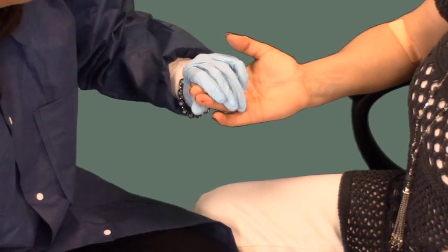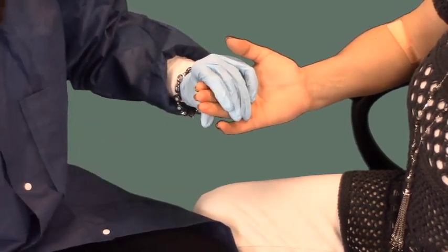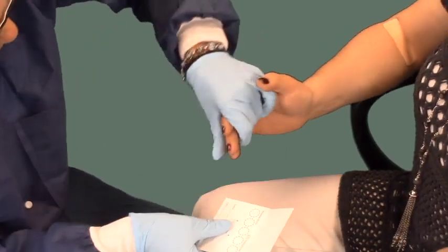Puncture the finger and wipe away the first droplet of blood. It is contaminated with alcohol and tissue fluid.